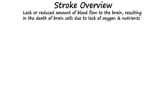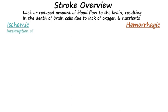There are two major types of stroke: ischemic and hemorrhagic. An ischemic stroke is characterized by the interruption of blood flow in cerebral vessels. Two different subtypes of ischemic stroke can occur due to blood clots.